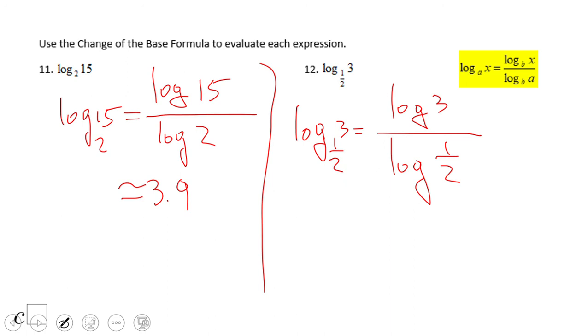Log in base 10 of 3, I'm sorry, divide by log of 1/2, divide by 2, 1 half. And we end up with a negative number, which we should not be surprised about that. Negative 1.5. That is an approximation of number 12.